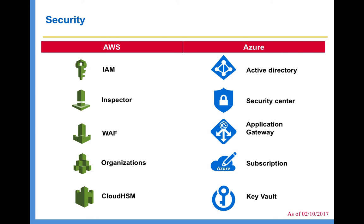The fourth security area is Organizations in AWS and Subscriptions in Azure. Both can be used to organize your resources from a billing perspective and from an access control perspective. There is a lot of functionality in terms of access management, giving structure to your resources, and cost management, which I'm going to discuss in detail in the security section of the course.